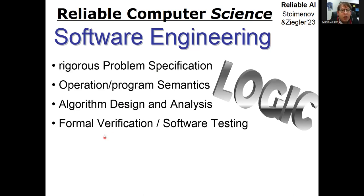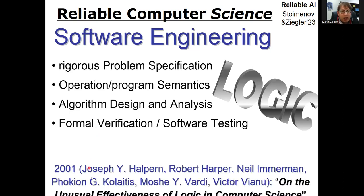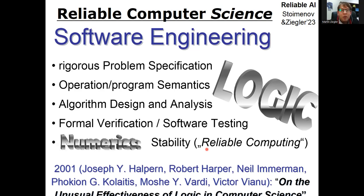Formal verification uses proof assistants. All this builds on logic so heavily that the famous authors Neil Immermann and Moshe Wardy wrote a paper on the unusual effectiveness of logic in computer science. And when it comes to numerics, stability becomes important,